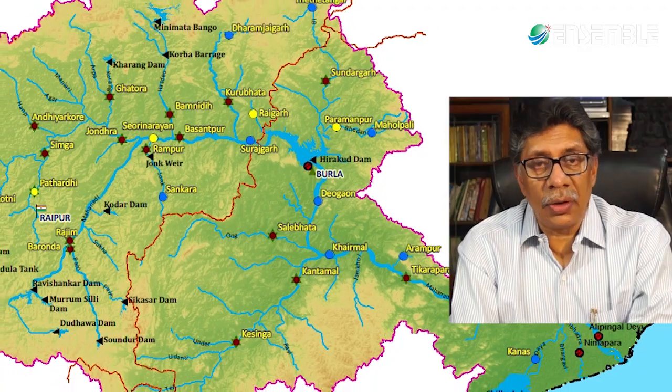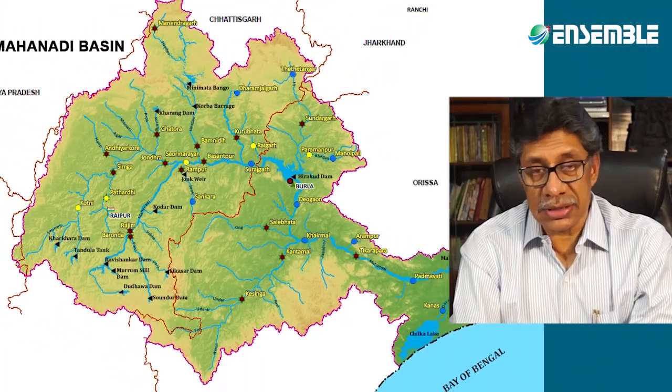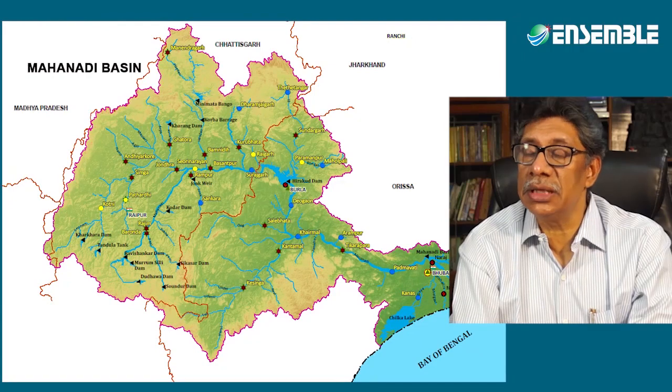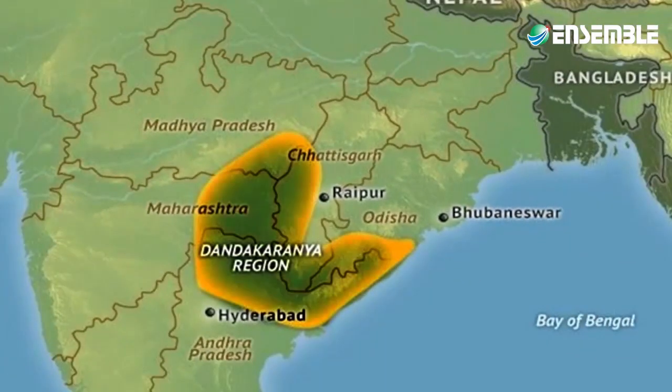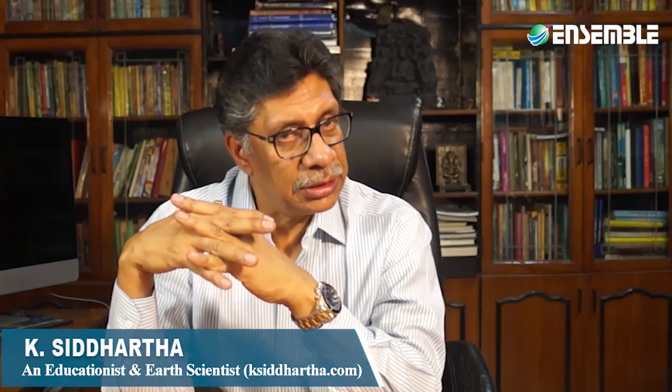The Mahanadi Basin is a low-lying tract surrounded on all sides by hills rising from 600 to 1000 meters. The central part of the Mahanadi Basin is named after Chhattisgarh. South of the Chhattisgarh Basin is the Dandakaranya region, which is known for being one of the first places where immigrants from Bangladesh — people who came from East Pakistan — were settled.